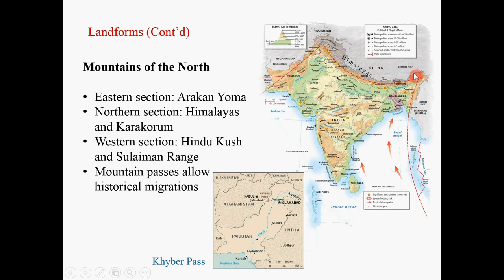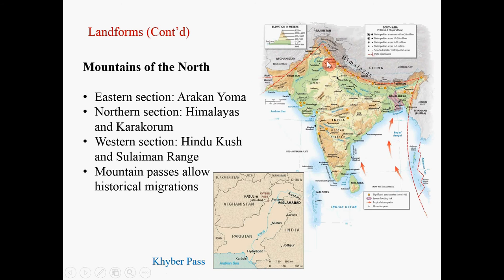These mountains form important geographical boundaries, but they are not entirely impassable, because within those mountains there are important mountain passes. These mountain passes allow flows of people, especially at the western section. Important mountain passes such as the Khyber Pass between Pakistan and Afghanistan allow flows of people and migration from Central Asia and Southwest Asia into South Asia.